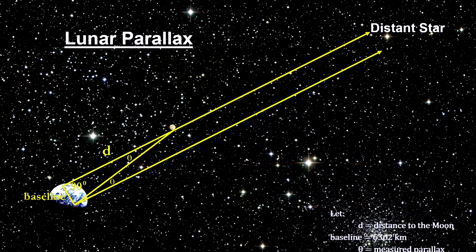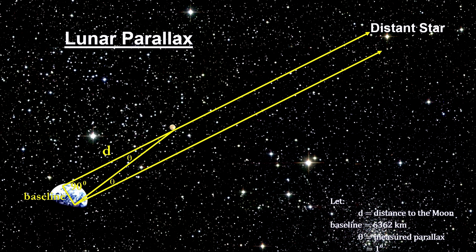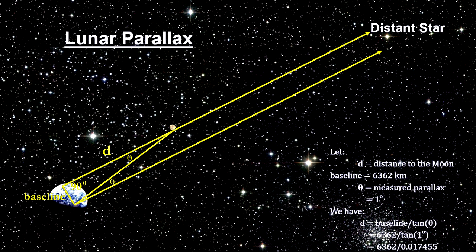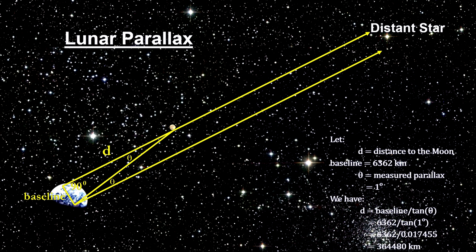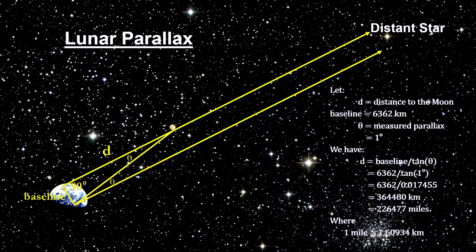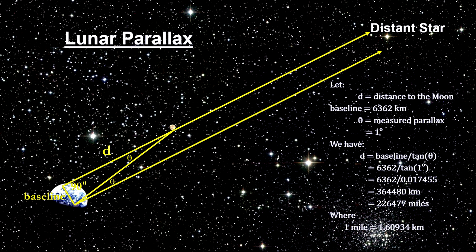Now we have all the angles of the Earth-Moon triangle and we know the length of one side. Simple geometry gives us the rest. Our parallax calculation gives us 364,480 kilometers to the Moon. With just over 1.6 kilometers in a mile, that comes to 226,477 miles.